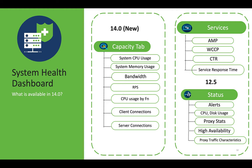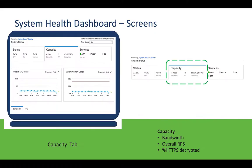With 14.0, we have added the capacity tab as part of the system dashboard. It will help administrators get details on bandwidth and RPS going through WSA, and provide details on how much decryption is being performed. There are graphs for CPU usage and memory usage, enabling administrators to drill down to specific issues when there is a CPU or memory spike. Threshold settings are available to identify anomalies. Graphs also cover overall RPS, HTTPS decrypted RPS, and CPU usage by function — which is critical to identify the contribution of different services to CPU usage.